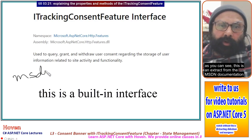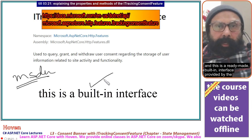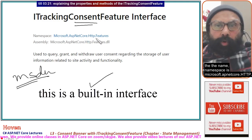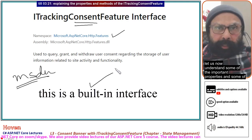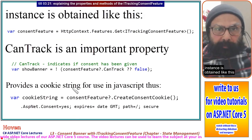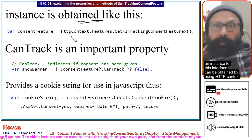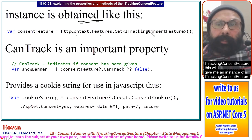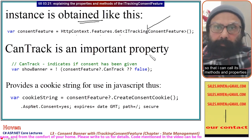As you can see, this is an extract from the MSDN documentation. This is a ready-made built-in interface provided by the ASP.NET Core framework. The namespace is Microsoft.AspNetCore.Http.Features. An instance for this interface can be obtained using HttpContext.Features.Get<ITrackingConsentFeature>(), which will give you an instance of ITrackingConsentFeature so you can call its methods and properties.